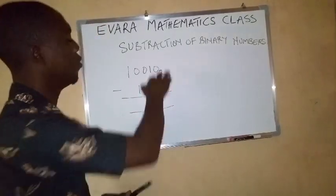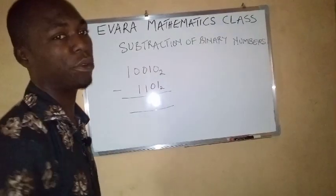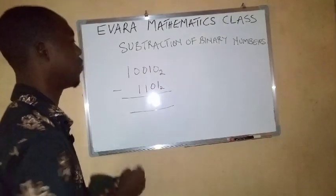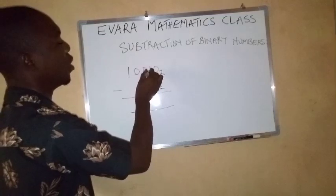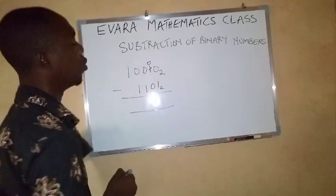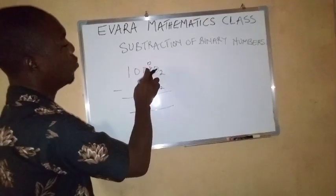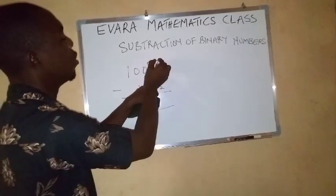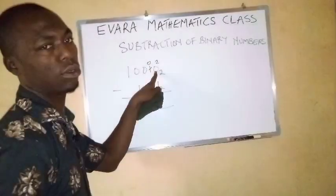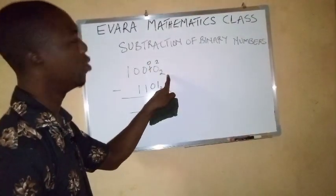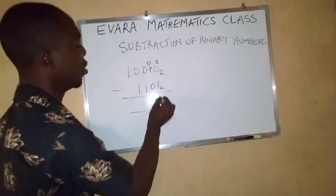Now, 0 minus 1, as usual, we will say impossible. So you borrow 1 from here, this one will remain 0. So the one you borrow here, when it gets to this point, it will become 2 because we are dealing with base 2. So now 2 minus 1 is 1.